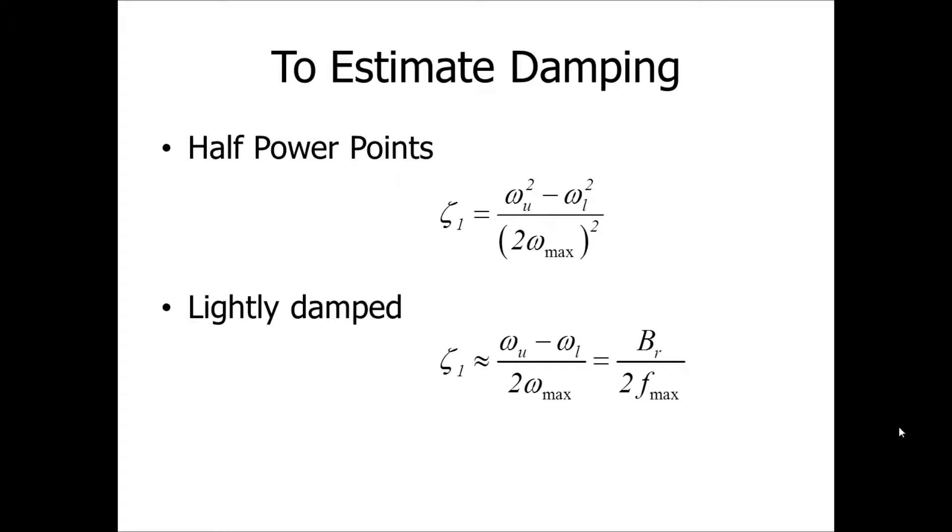And then we have two relationships which can give us the damping. First of all, we have a damping zeta, which is exactly defined by the upper frequency in radians per second, omega U squared minus omega L squared divided by 2 times omega max squared. But for lightly damped systems that we are mostly interested in, because this is a vibration analysis class,